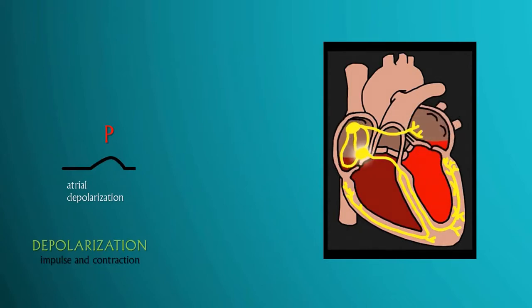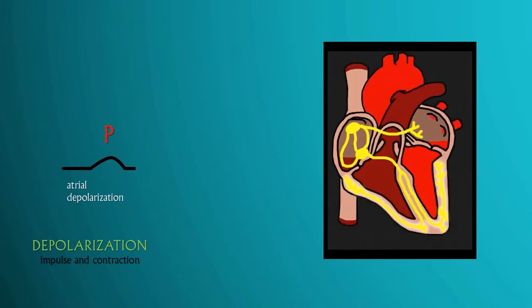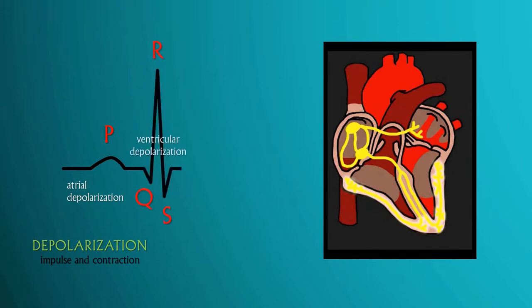The AV node picks up the impulse and communicates it down the bundle of His through the right and left bundle branches and into the Purkinje fibers within the ventricles, causing them to contract.